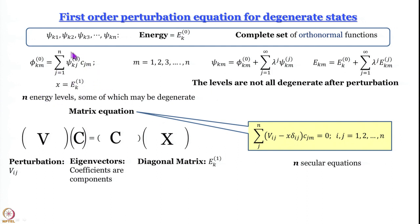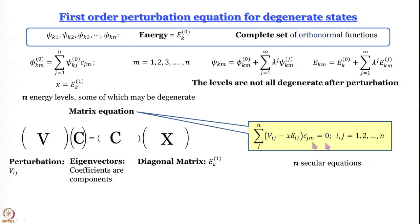We write the wave function starting with a linear combination, then go to the usual definition of the corrected wave function and corrected energy, and arrive at a matrix equation in which the perturbation V_ij operates on the eigenvectors to give the first-order energies E_k as the diagonal elements of the matrix X.